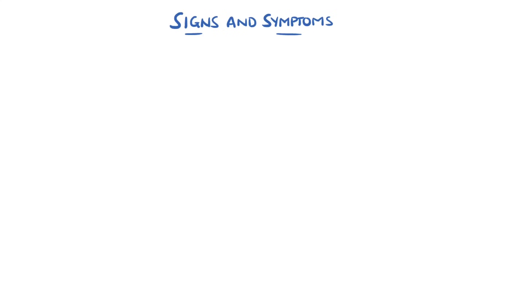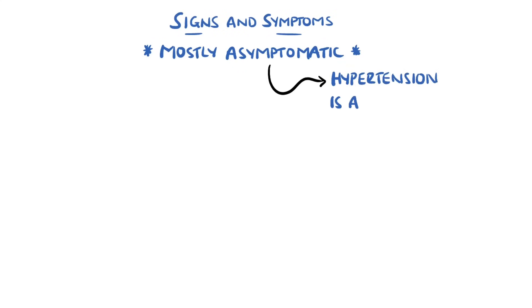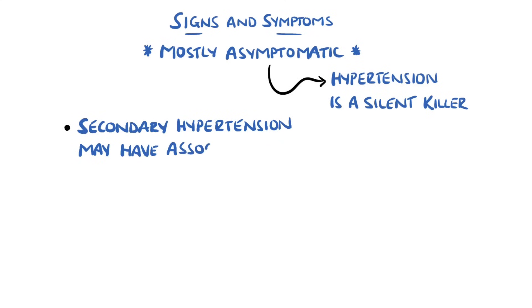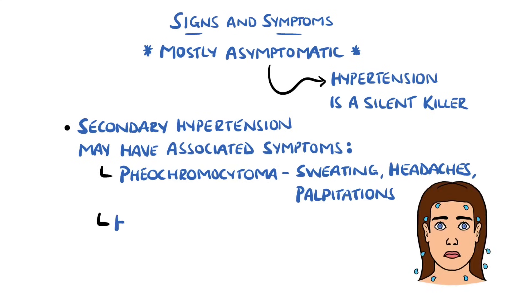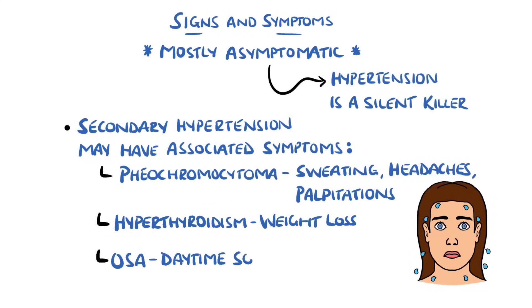Most of the time primary hypertension is asymptomatic and people don't know that they have it, which is why, combined with its link to other significant diseases, it is called the silent killer. Secondary hypertension may have symptoms of the underlying cause, such as sweating, headaches and palpitations in pheochromocytoma, heat intolerance and weight loss in hyperthyroidism, and daytime sleepiness in obstructive sleep apnea.